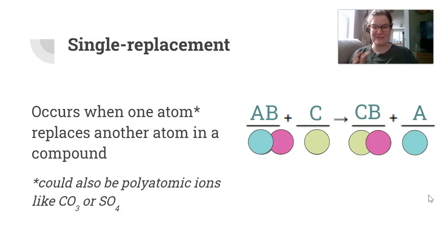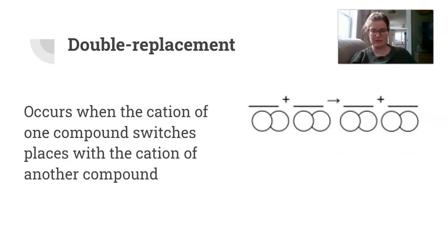For single replacement reactions, you always have a single element on the left side of the arrow and also on the right side—the C and A in this example. Double replacement is similar to single replacement, but as the name suggests, instead of single elements replacing, they're all going to be doubled up, or they're all going to be compounds.